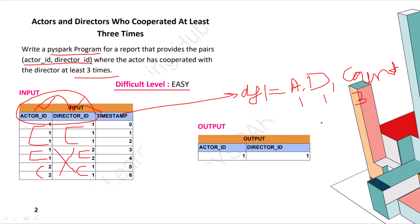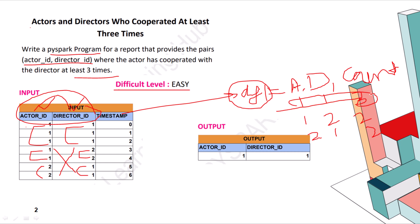For the second row, actor ID 1, director ID 2, count will be two. The third row will have actor ID 2, director ID 1, and count will be two. So if the count is three or more, we should get the output; otherwise, those rows will not appear in the output.